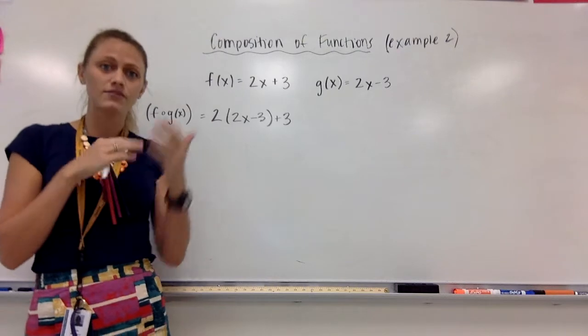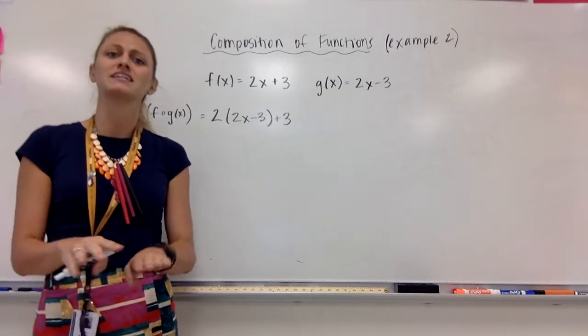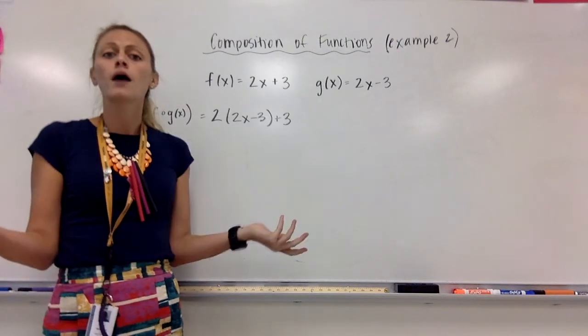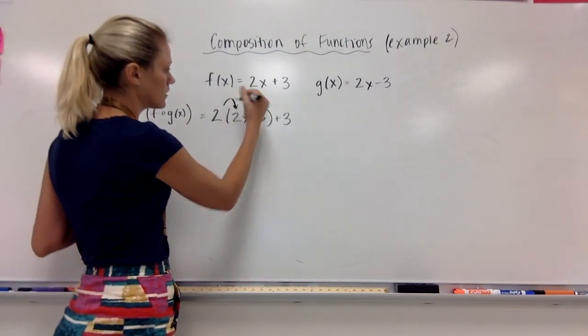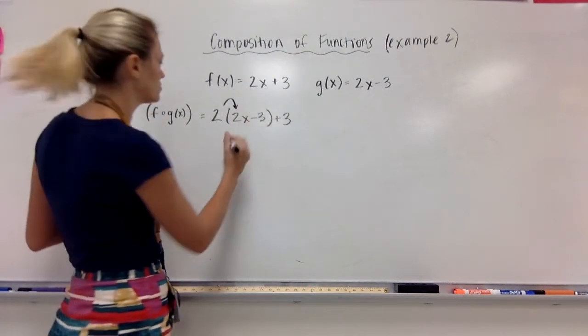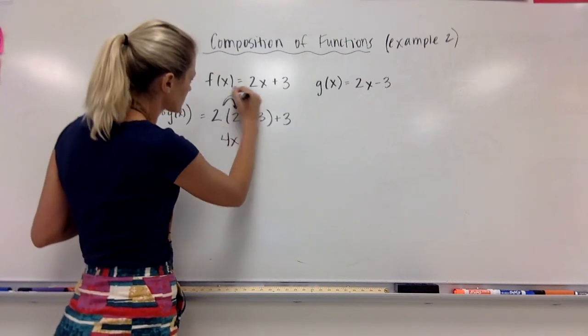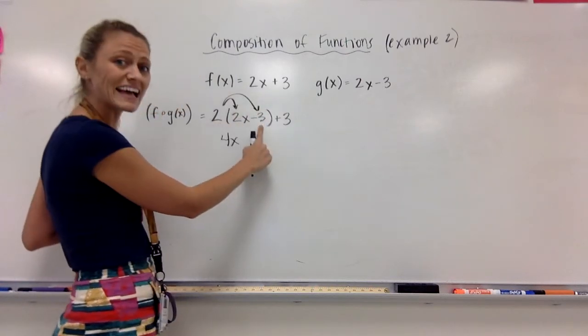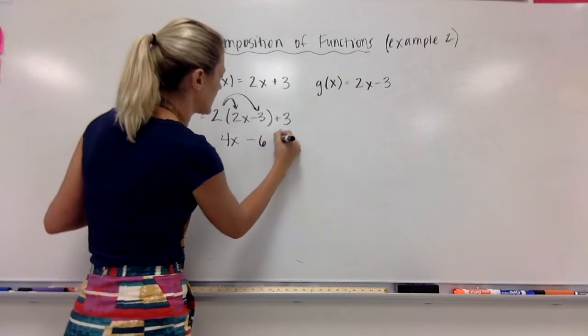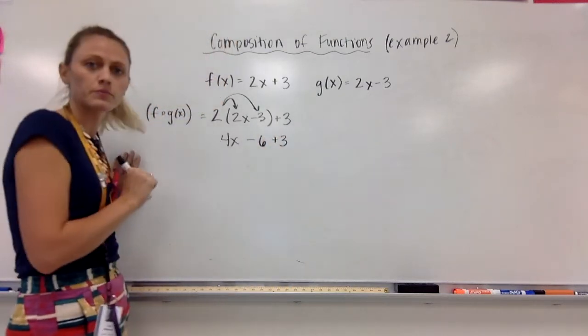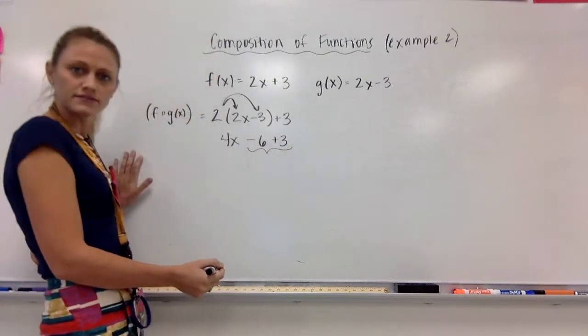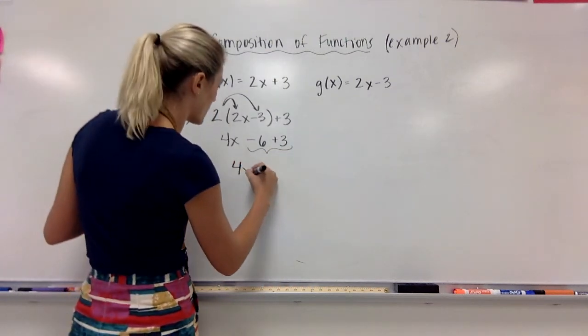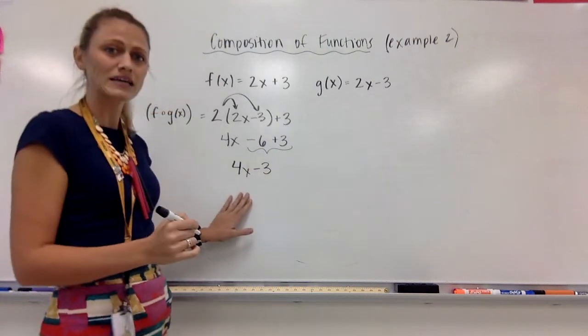Remember, we need to end up with just an x term when we simplify this, and that will tell us if they are inverses or not. My first step here, I need to distribute: 2 times 2x is 4x, 2 times negative 3 is negative 6, and then plus 3. This negative 6 plus 3 is going to end up as 4x minus 3.